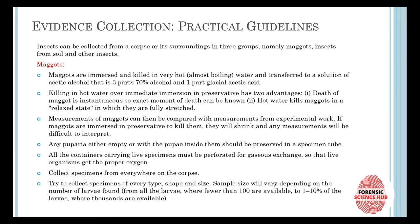Here are some practical guidelines for evidence collection. Insects can be collected from a corpse or its surroundings in three groups: maggots, soil insects, and other insects. For maggots, they must be immersed and killed in very hot, almost boiling water, and then transferred to a solution of acetic acid — that is 3 parts 70% alcohol and 1 part glacial acetic acid, so a 3:1 ratio.